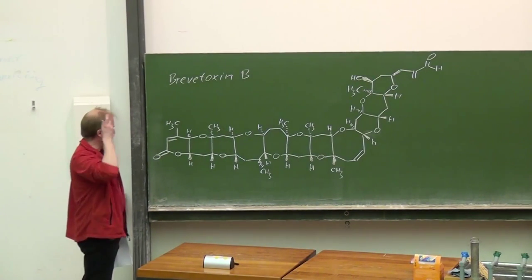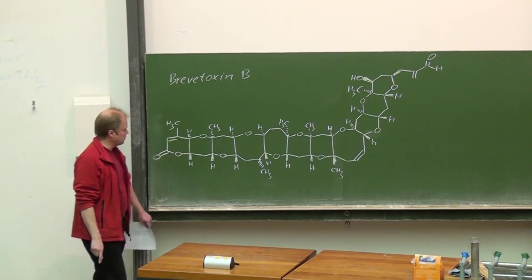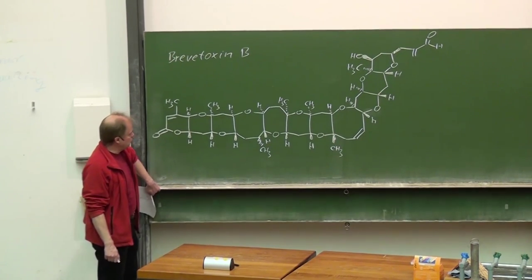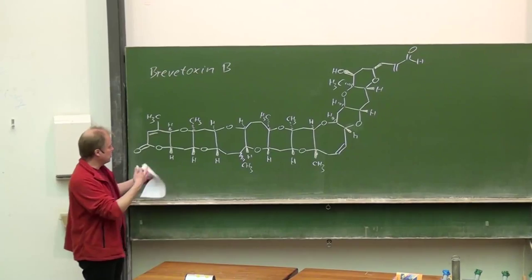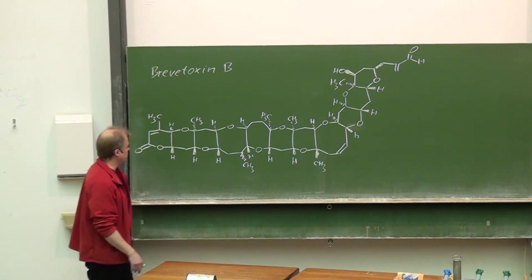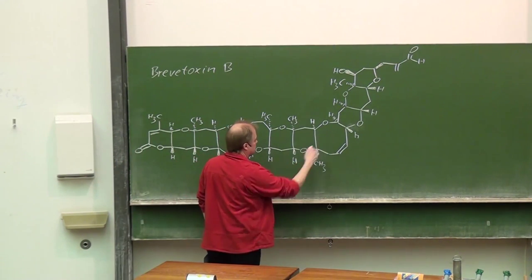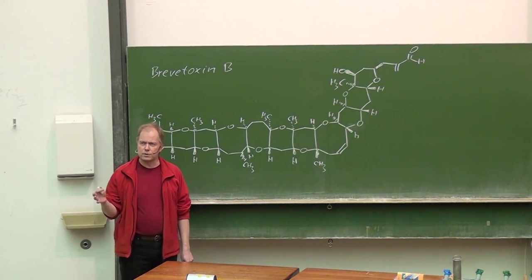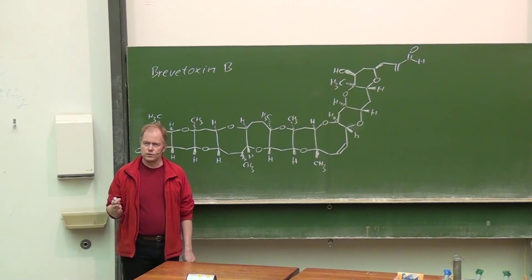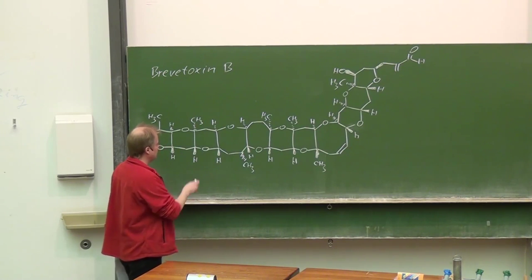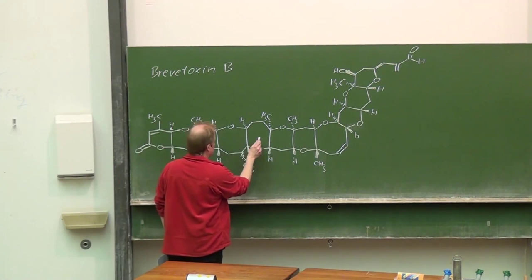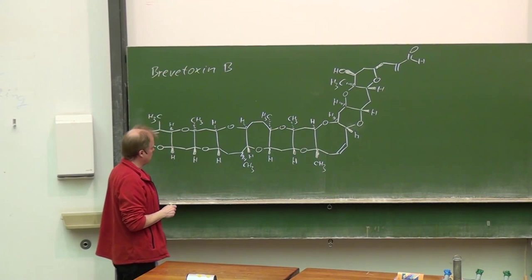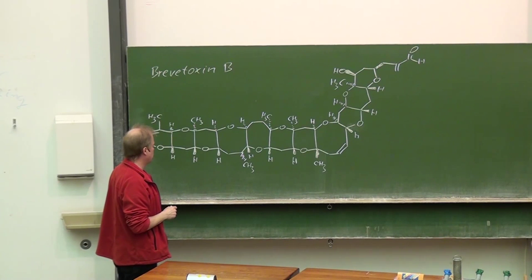Let's have a look at strategic bonds. First of all, one should look for strained annulated systems. Here we see there is an eight-membered ring — eight-membered rings are always somewhat a problem in synthesis, the problem with the formation of medium-sized rings.